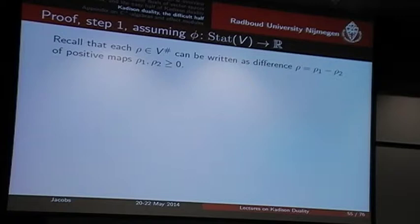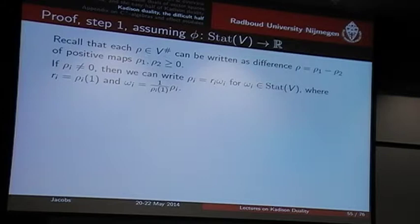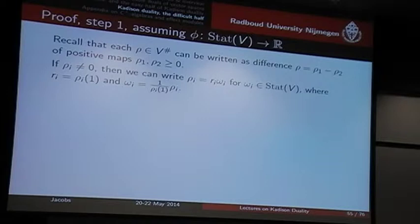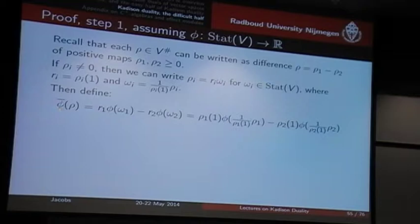Assuming they're not zero — that's a trivial case I'm leaving out — I take out the multiplication factor of rho-i of one, and I obtain two states omega-i, being rho-i divided by this scalar one over rho-i of one. Now, to this omega-i I can apply phi. I've scaled down these things and I can apply phi, then rescale them to get a good definition. So, what I do is define phi-overline of rho as phi on omega-one and omega-two, then rescale with the vectors I put inside to get this working. Remember, phi is an affine continuous function, not a linear function, so you cannot just move this scalar in and out — you have to use the affine property.